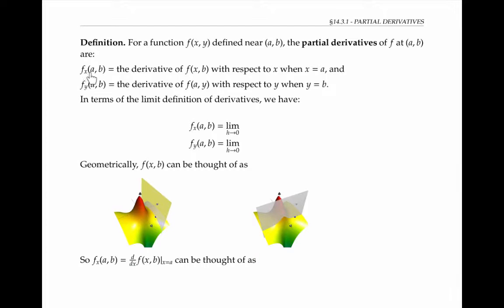When we write f sub x AB, that means we hold y fixed at B and let x vary, and compute the derivative of f of xb with respect to x when x equals a. In other words, we're computing d/dx of f of x, b thought of as a function of x at x equals a.